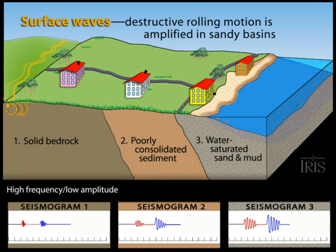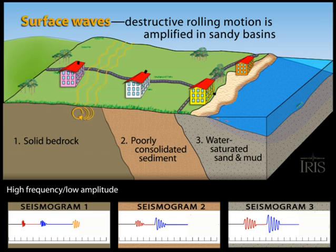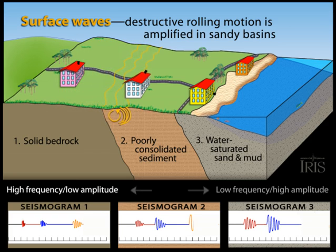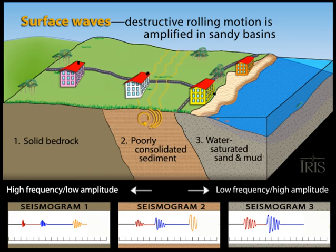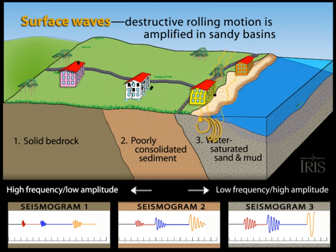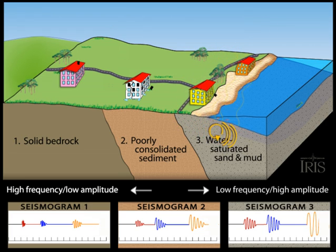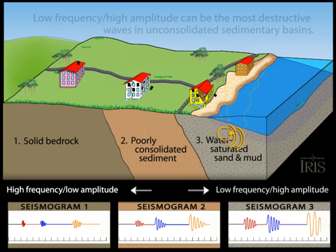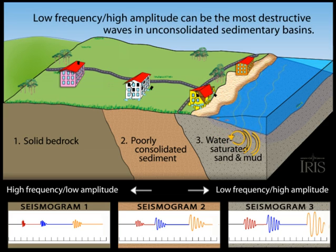The rolling surface waves are the most damaging in unconsolidated sediment. As surface waves enter the sedimentary layer, they slow down and increase in size, causing buildings to roll. If not engineered for the motion, they can crack and tumble. But even a well-engineered building can sink during the shaking and liquefaction of underlying wet sediment.